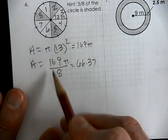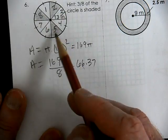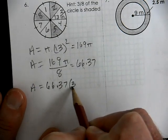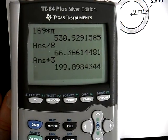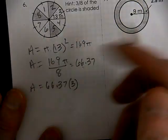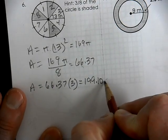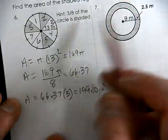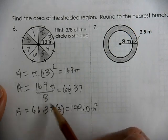That's the area of each piece. There are three gray pieces, so we take 66.37 and multiply by 3. The total area of all three pieces is 199.10 inches squared. Another way to do it: find the total area and multiply it by three-eighths — that multiplies by 3 and divides by 8 all in one step.